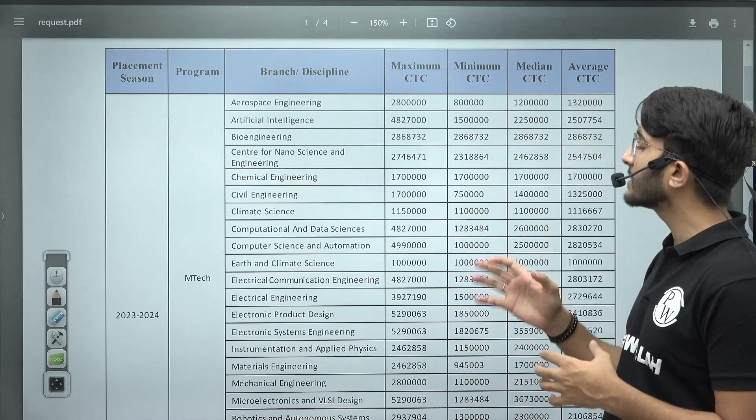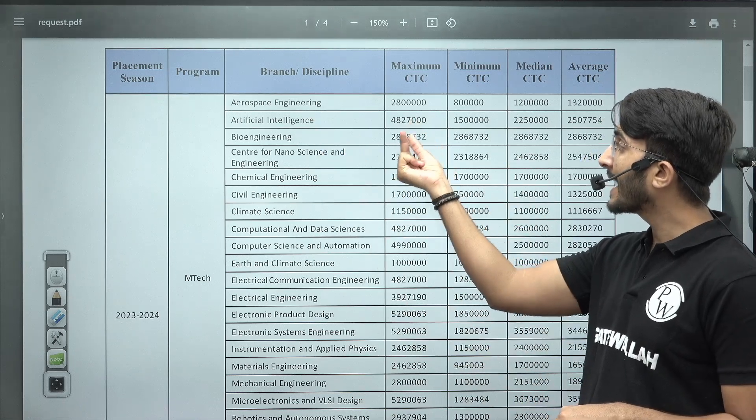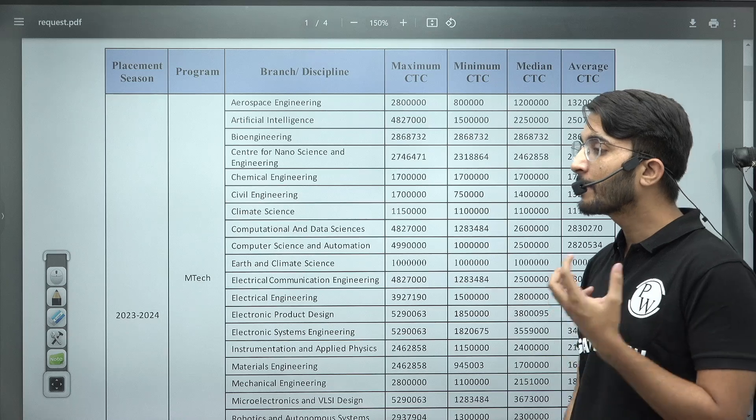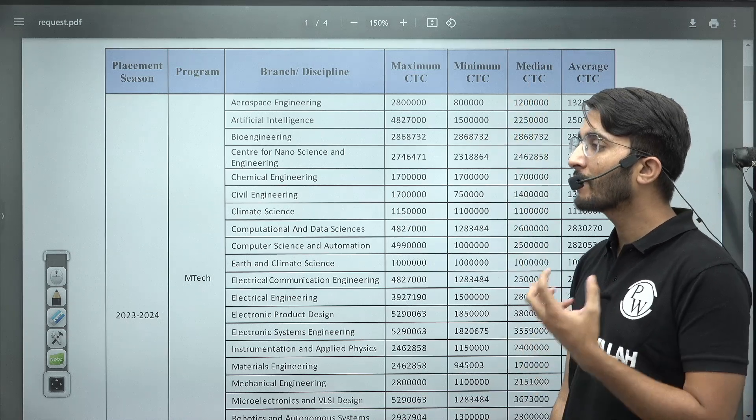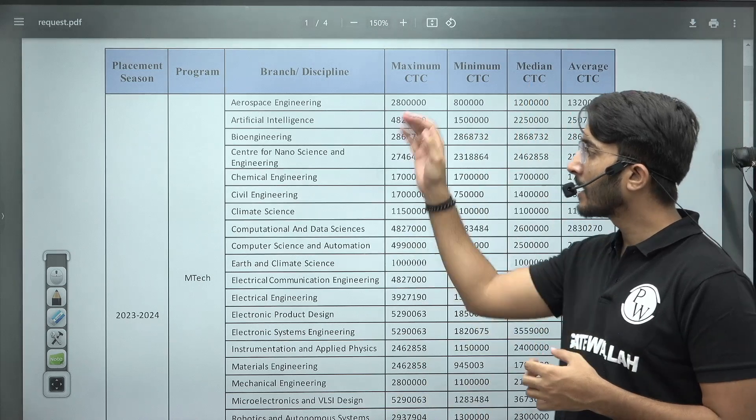Similarly guys, for Artificial Intelligence, 48 lakh 27,000 is maximum CTC, minimum CTC is 15 lakh, and median CTC is 22 lakh 50,000, and similarly 25 lakh average CTC.